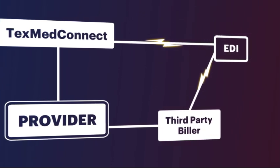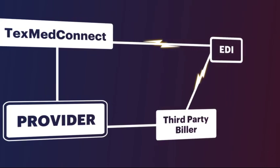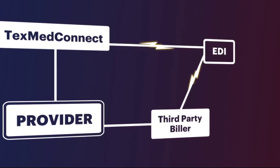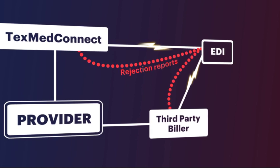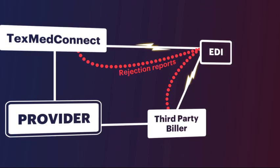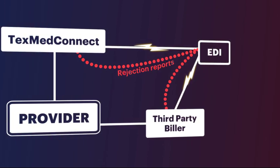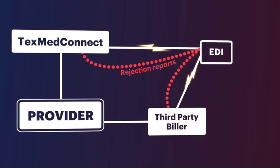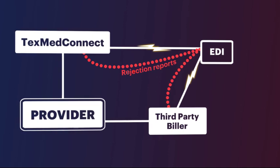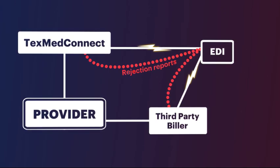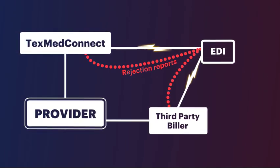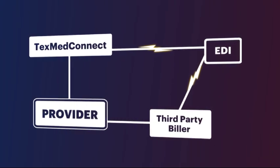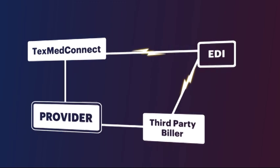The claims engine is where the adjudication of the claim will occur. If an individual claim is rejected, an error message will be generated. If a batch submission is rejected, the EDI server will send a report back to the biller with rejection information. It is important to note that rejected claims are not the same as denied claims, as they have not been adjudicated and will not show up on the R&S report. It is the responsibility of the provider to check their billing system to look for rejection reports. If the claim passes the EDI server, it will move through the claims processing engine.